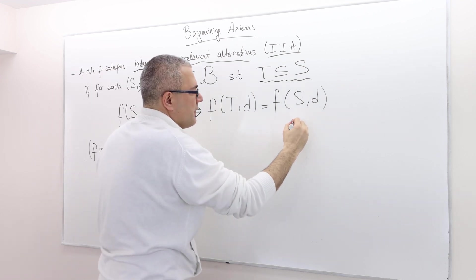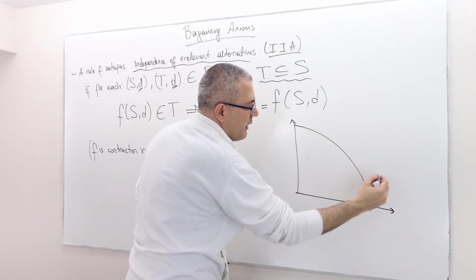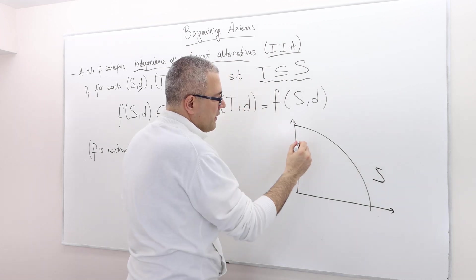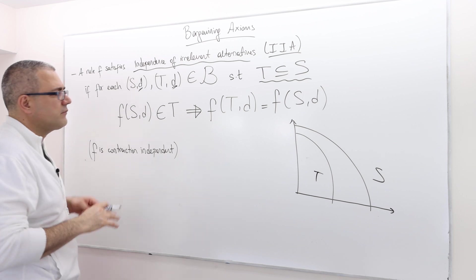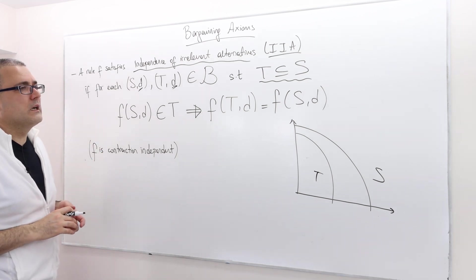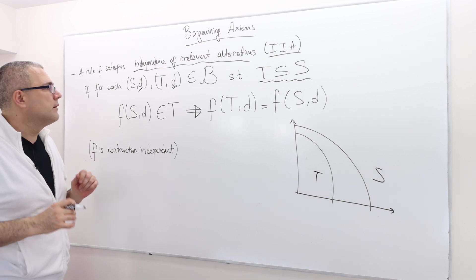So if this is my bargaining problem S, then T is something like this. So this is what T is. There's a smaller bargaining set.